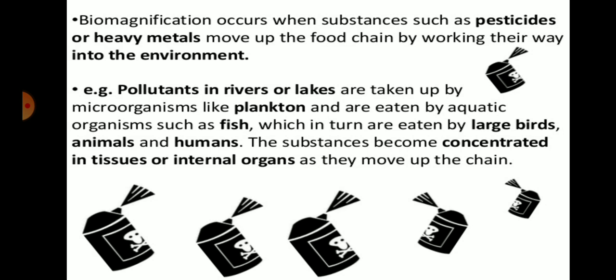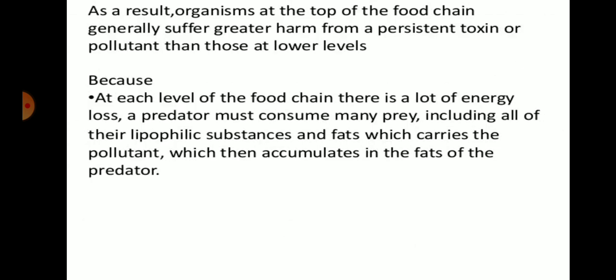As a result, organisms at the top of the food chain generally suffer greater harm from persistent toxins or pollutants than those at lower levels. Humans, at the top of the food chain, suffer greater harm than those at lower levels. Planktons have a very low concentration of pesticides in their body, but humans, animals, and birds have a high concentration of pollutants in their body. At each level of the food chain there is a lot of energy loss.